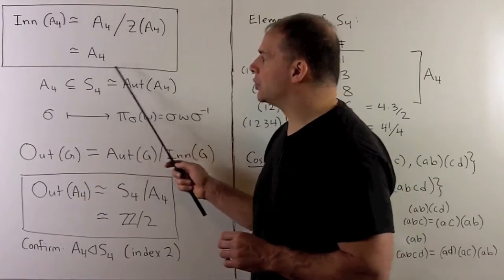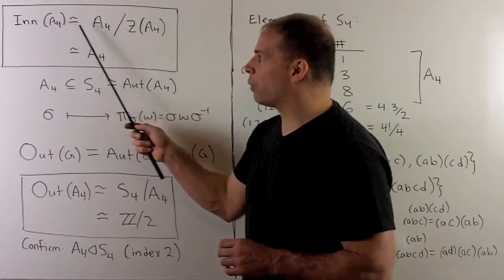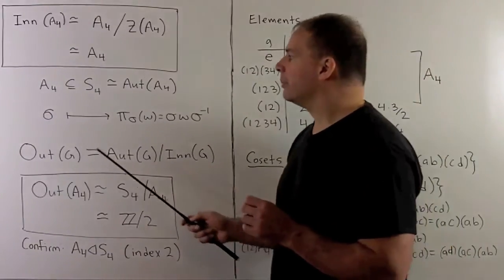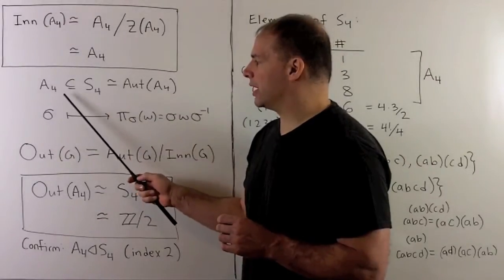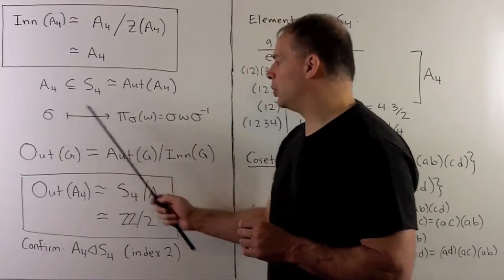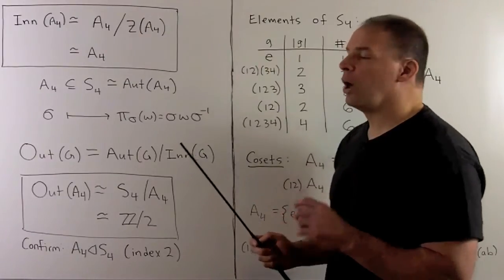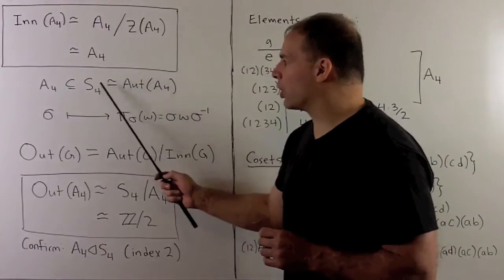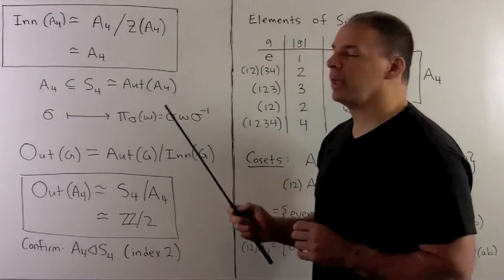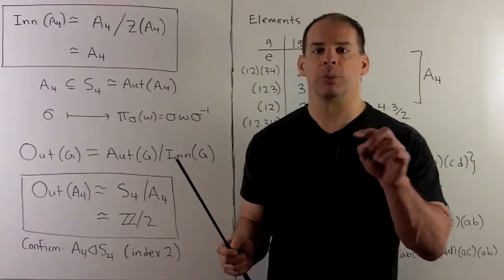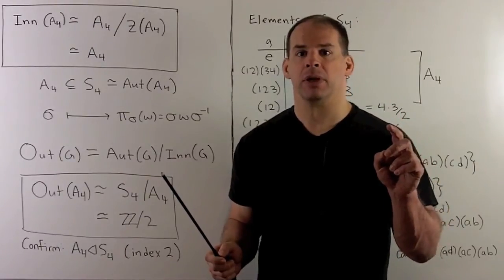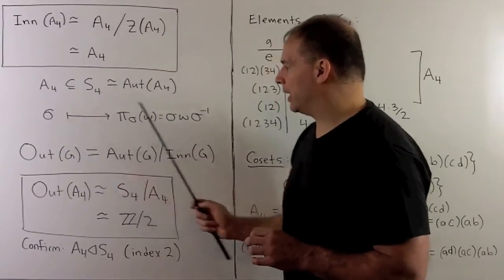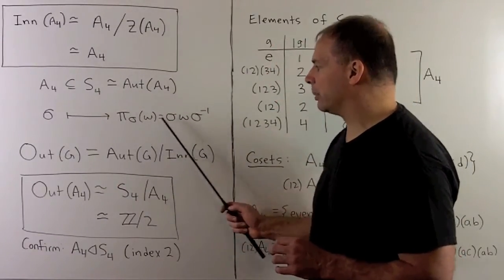Let's think of the two ways we're using A4 to get automorphisms. On the one hand we have the inner automorphisms, so we take some σ in A4 and use conjugation. On the other hand, these are elements of S4, and the way we have S4 corresponding to Aut(A4) is by relabeling elements using your permutation σ. We note for A4, the two definitions are consistent: conjugation is the same as relabeling.